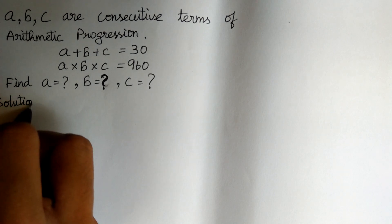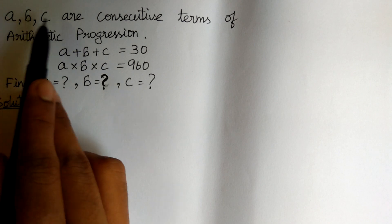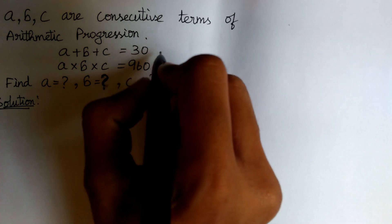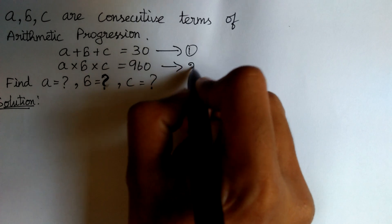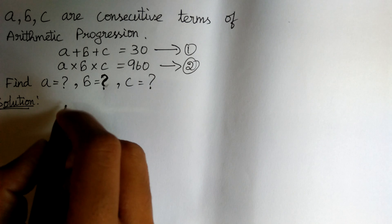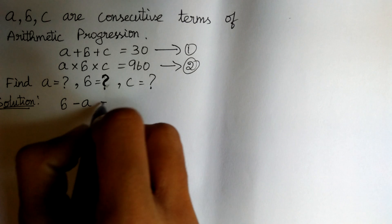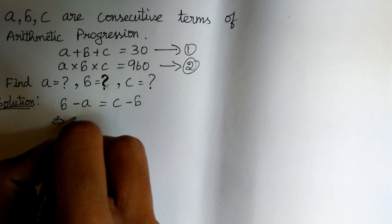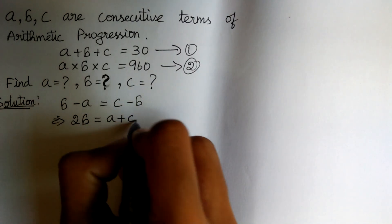Solution. Given that A, B, C are in arithmetic progression. Let us take the sum equation as equation 1 and the product equation as equation 2. We know that A, B, C are in arithmetic progression. Therefore, B minus A is equal to C minus B, which gives 2B is equal to A plus C.